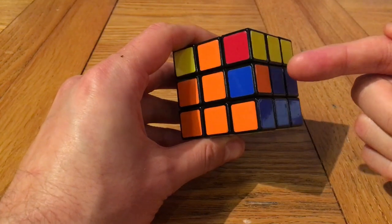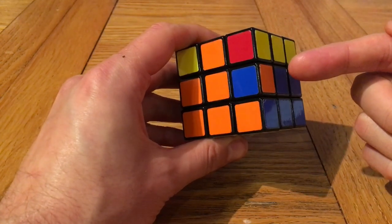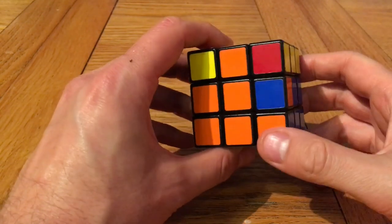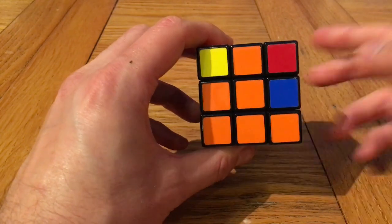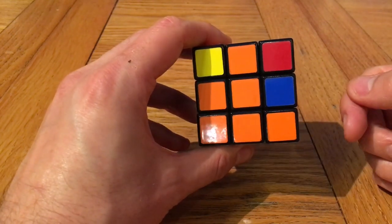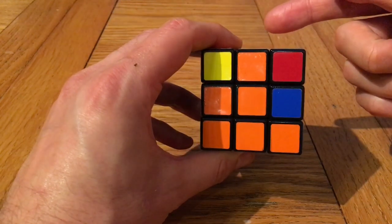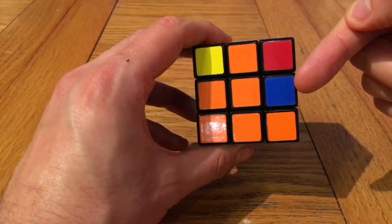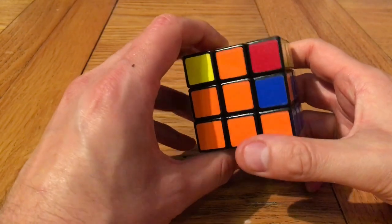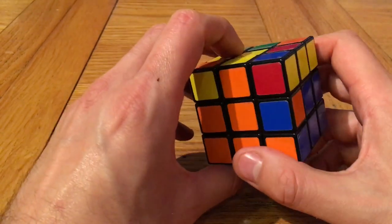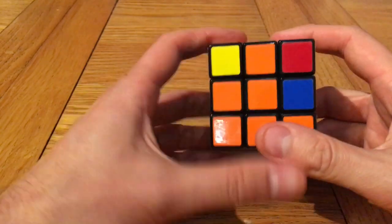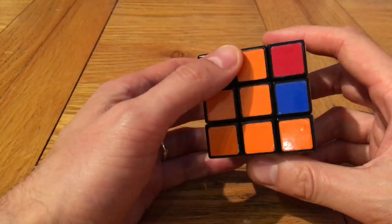Sometimes you get an edge piece that is in the correct position but it's flipped, it's the wrong way round. The beginners method will ask you to perform the same algorithm twice, once to move the piece out of the way and then the same algorithm again to move it back into place the right way round. I'll just show you that now, but maybe we'll speed up the solve. But it goes something like this.